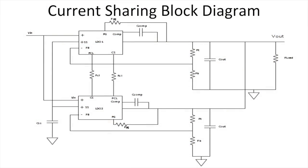Here we see a basic circuit diagram of two LDOs or low dropout regulators connected for current sharing operation. The PCL pin of LDO2 is then connected to the CS pin of LDO1 through another RCL resistor. The value of this resistor connected to the PCL pin sets the current limit threshold.